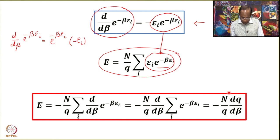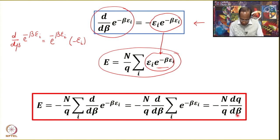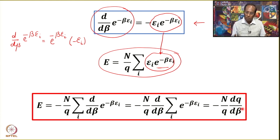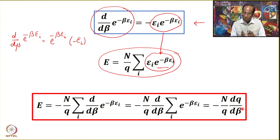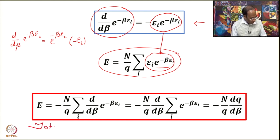We now have an expression for the total energy connected with the molecular partition function: we need to take the derivative of q with respect to β. Please note that β = 1/kT, so different books may express this in terms of temperature as well — in terms of dq/dT. Do not get confused when you see this; β is essentially an inverse temperature with the Boltzmann constant involved.